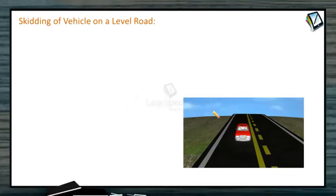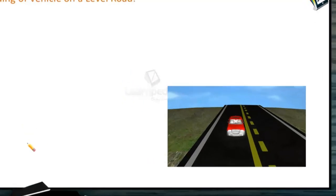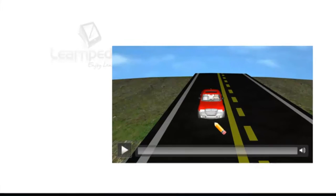First, we will study the skidding of vehicle on a level road. A car moving on a level road comes across a bend. When it wants to turn, when a vehicle takes a turn on a circular path, it requires centripetal force. If the friction provides this centripetal force, then the vehicle can move in a circular path safely. If friction force is greater than or equal to required centripetal force, then only it can negotiate the curve.